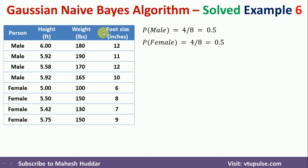Now, if you notice the values of the features, they are continuous in nature — they are not discrete. Hence, we cannot calculate the conditional probabilities directly, such as the probability that a person is male given height, or given weight, and so on. Hence, what we have to do is calculate the mean and standard deviation of each attribute for male and female separately.